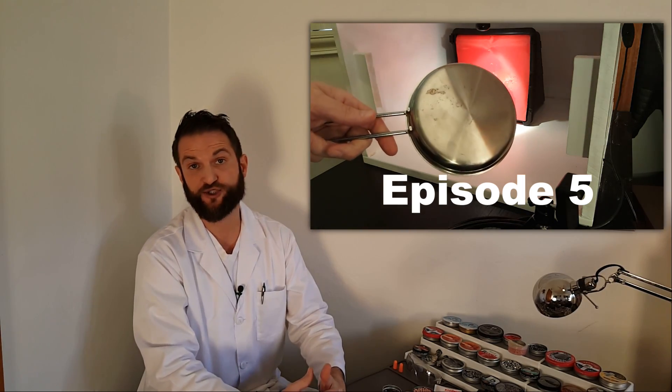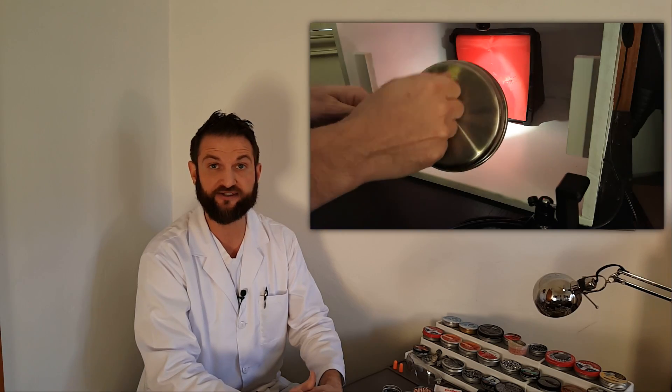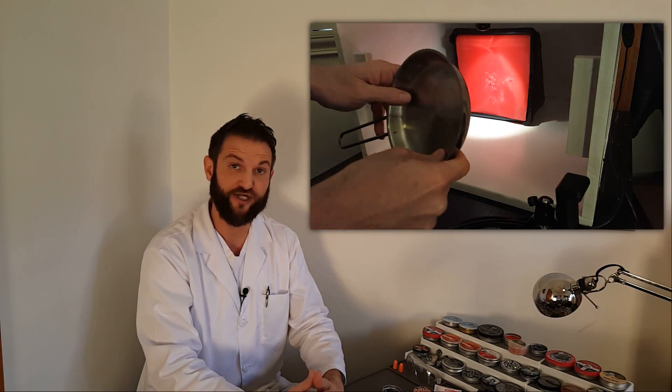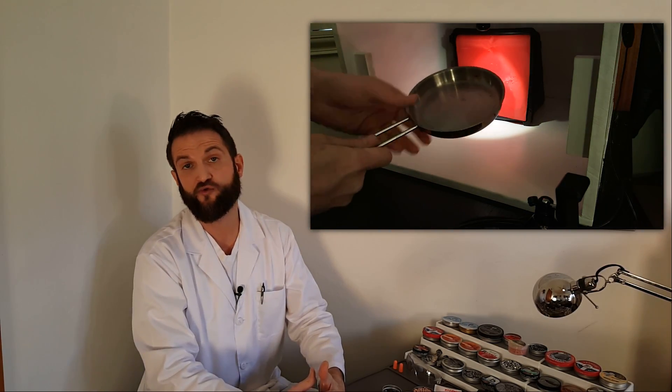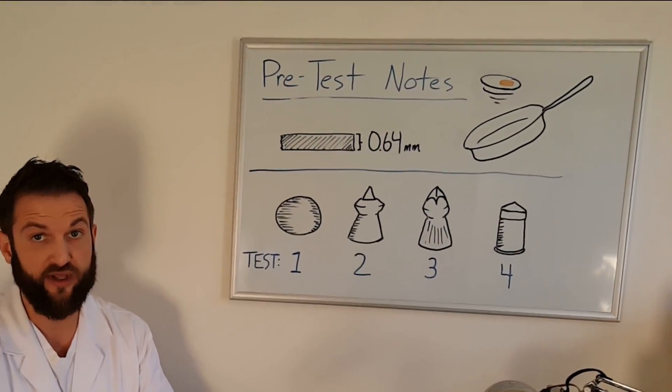In this episode, we'll be looking at how a projectile's shape and material affect its ability to penetrate a steel frying pan. The projectiles we'll be using in today's test represent a wide variety of 177-caliber airgun pellets.